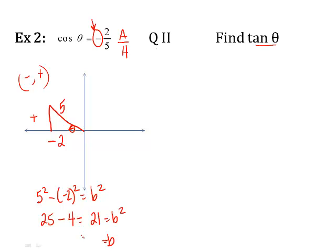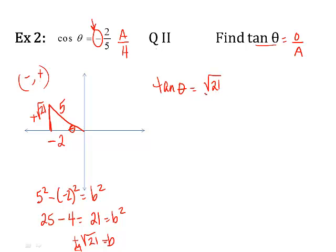So b is plus or minus the square root of 21. But we decided since it's a y value and we're in quadrant two, we need a positive value, so it's going to be the positive square root of 21. Now to find tangent, remember tangent is the opposite over the adjacent. The tangent of theta: what's opposite theta? That's positive square root of 21, over the adjacent side which was negative two. So my answer is negative square root of 21 over two.